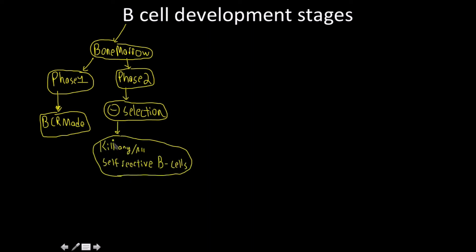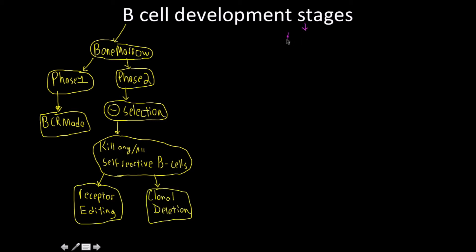This may seem harsh, but keep in mind that during negative selection we have clonal deletion, but before that we have the chance to save them by receptor editing. Clonal deletion is kind of the last straw — these self-reactive cells have been given every chance to become functional members of our B cell society. The next stages take place in the lymph nodes, the secondary lymphoid tissues, as opposed to the bone marrow which is primary.